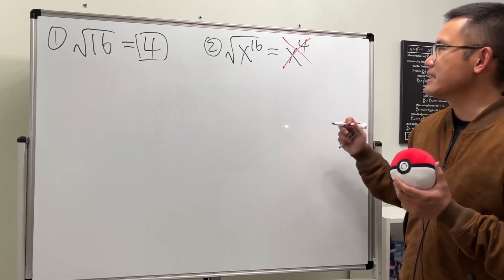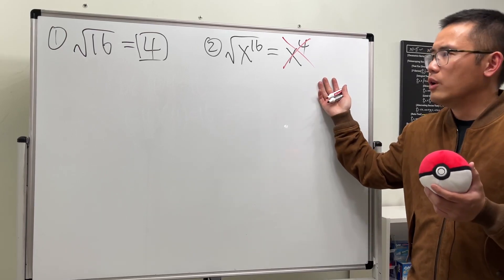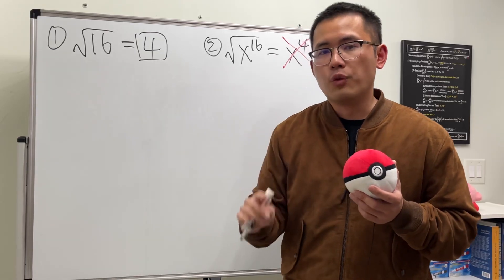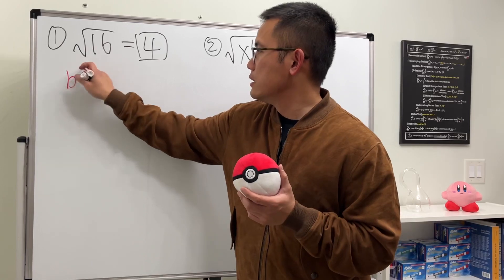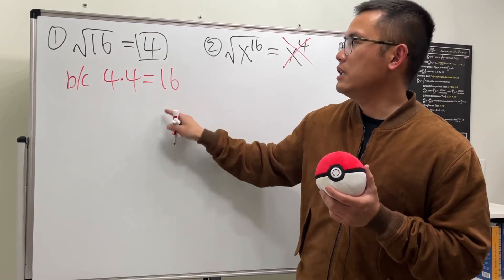The answer is not x to the fourth power. So what's the answer though? Well, before I tell you guys the answer, let's talk about why the answer for this right here is equal to 4. The answer for this is equal to 4 because when we have 4 times 4, this right here gives us 16, which is exactly what we want. Four is the answer, no problem.